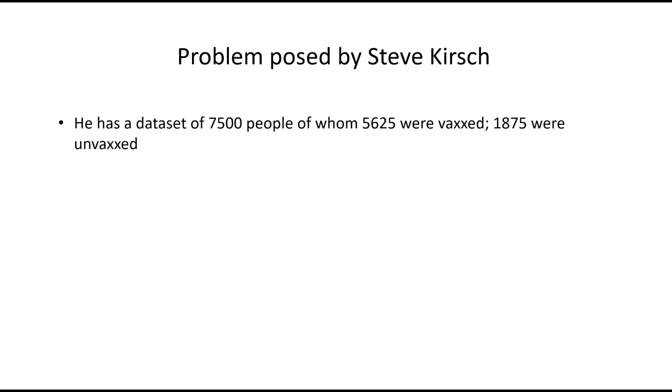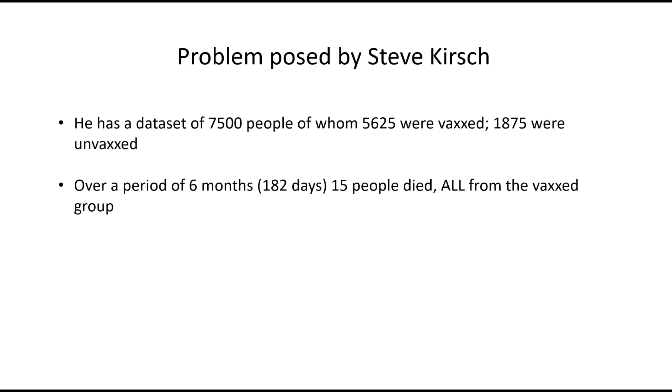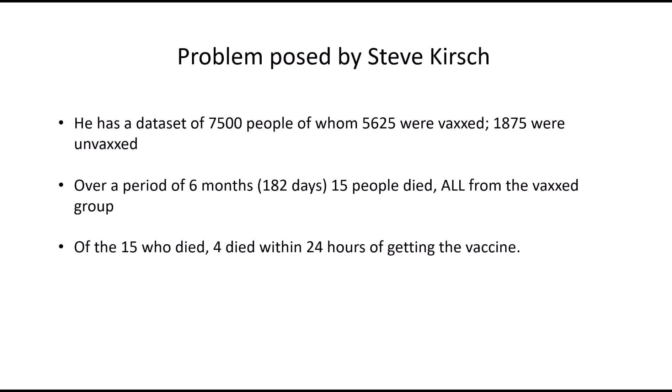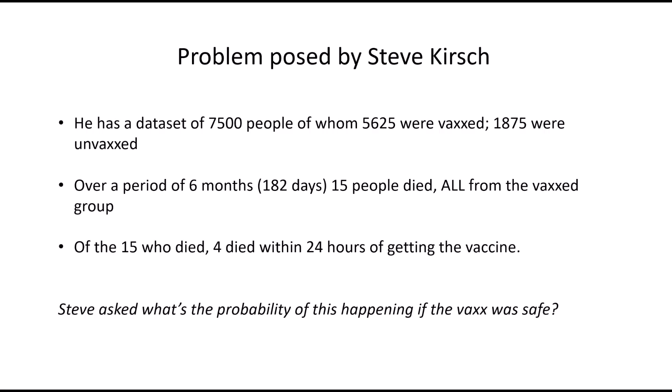A few days ago Steve Kirsch posed the following problem: he has a dataset of 7500 people, of whom 5625 were vaccinated and 1875 were unvaccinated, observed over a period of six months (182 days). 15 of those people died, but they were all from the vaccinated group, and of the 15 who died, four died within 24 hours of getting the vaccine. Steve asked: what's the probability of this happening if the vaccine was safe?